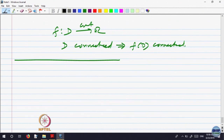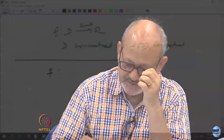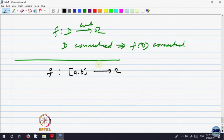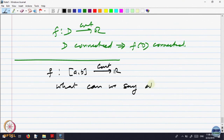Next, we want to analyze compactness — whether, like connectedness, compactness is preserved or not. Let us look at a very special case. We know that compact subsets of the real line are those which are closed and bounded. Let us look at a very special example when the compact set is a closed bounded interval. So, F is a function on [a, b] to R, continuous. We want to analyze what we can say about F([a, b]), the range of F.